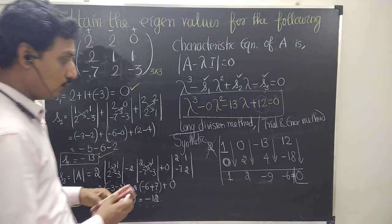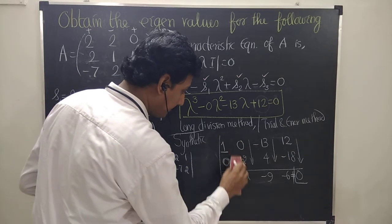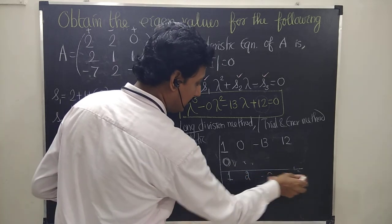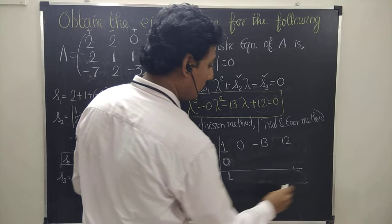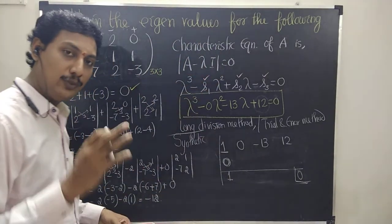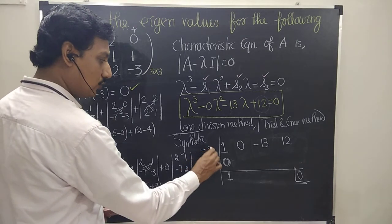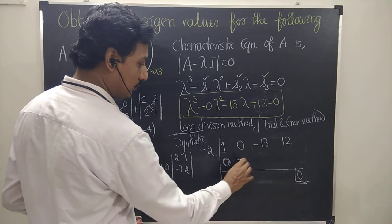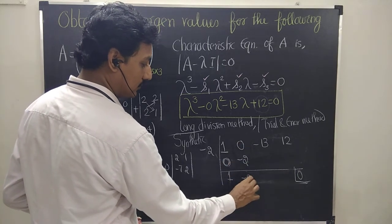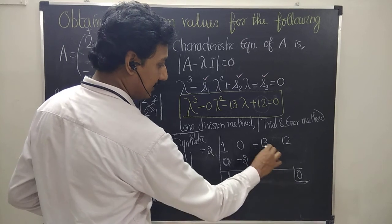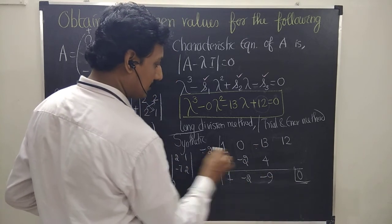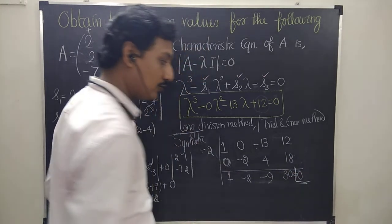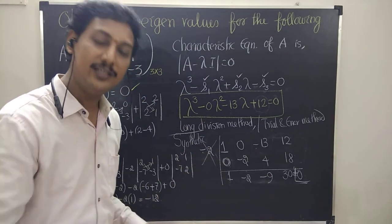So, what about minus 2? Once again I go for minus 2. 1 plus 0 is 1; 1 times minus 2 is minus 2; 0 plus minus 2 is minus 2; minus 2 times minus 2 is plus 4; minus 13 plus 4 is minus 9; minus 9 times minus 2 is plus 18; 12 plus 18 is 30. This is not equal to 0, so minus 2 is also not a root.